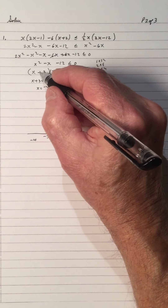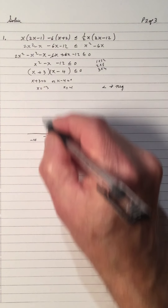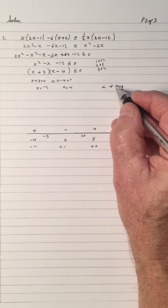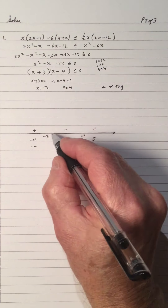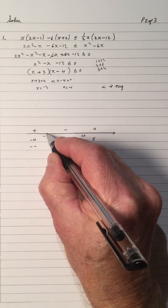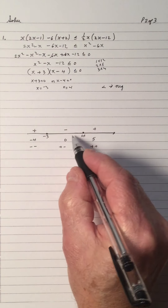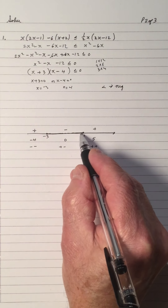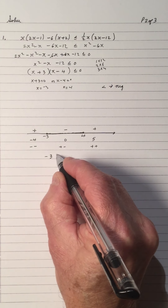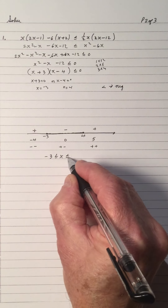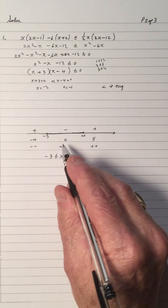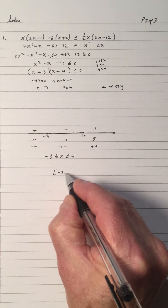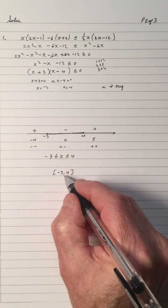Putting in negative 4: negative 4 gives a negative in the first factor and a negative in the second factor, so negative times negative is positive. We're looking for the negatives, so we pick the middle interval. Since it's less than or equal to, negative 3 and 4 are included. So all numbers between negative 3 and 4 make the inequality true. The answer is negative 3 ≤ x ≤ 4, or in interval notation, [−3, 4].